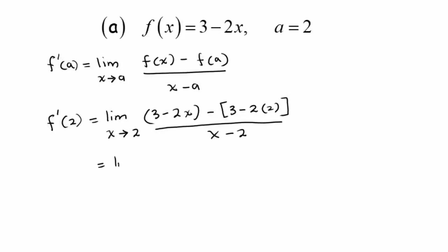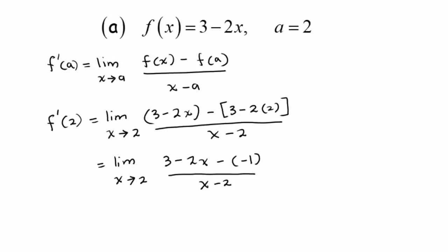Now I am going to simplify the numerator. We have 3 minus 2x minus (3 minus 4), which simplifies. This gives us the limit as x approaches 2 of 4 minus 2x divided by x minus 2.